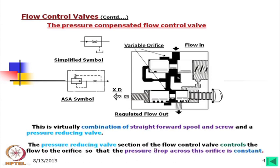The pressure reducing valve section of the flow control valve controls the flow to the orifice so that the pressure drop across this orifice is constant. This means that when there is a change in pressure, this orifice is controlled such that the pressure drop remains constant and the spool returns to its original position. The flow remains constant; that pressure difference can be changed only by tightening or loosening this spool.